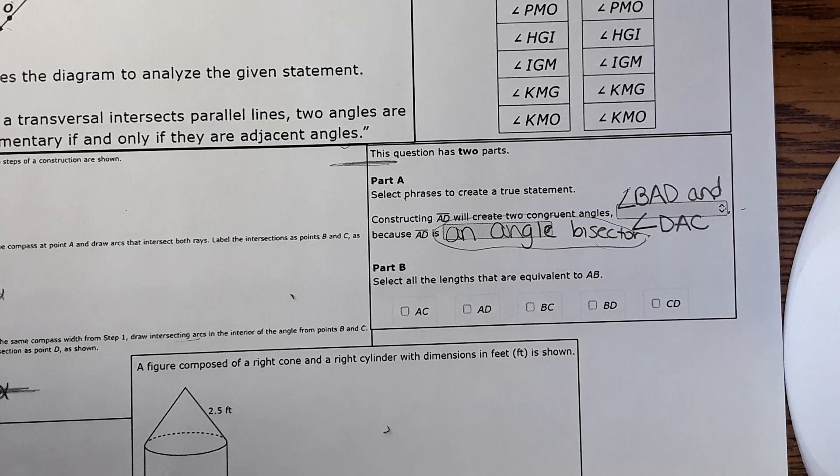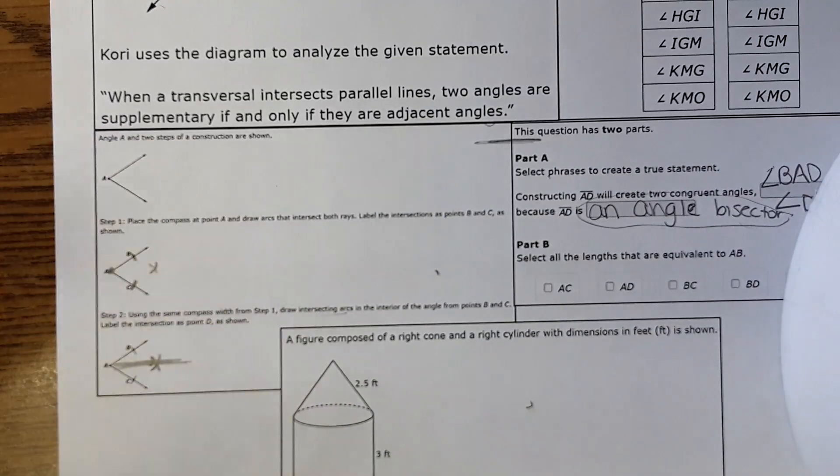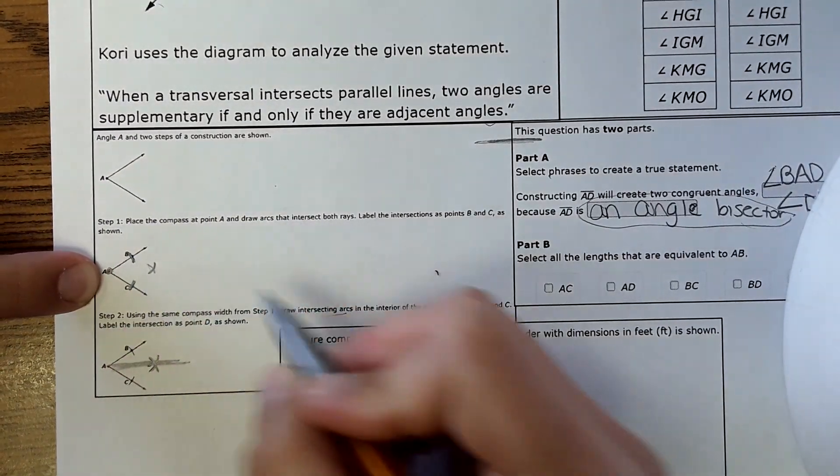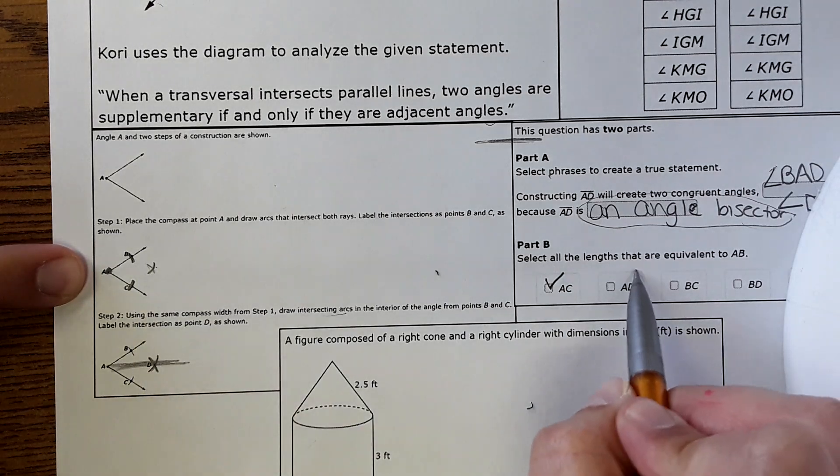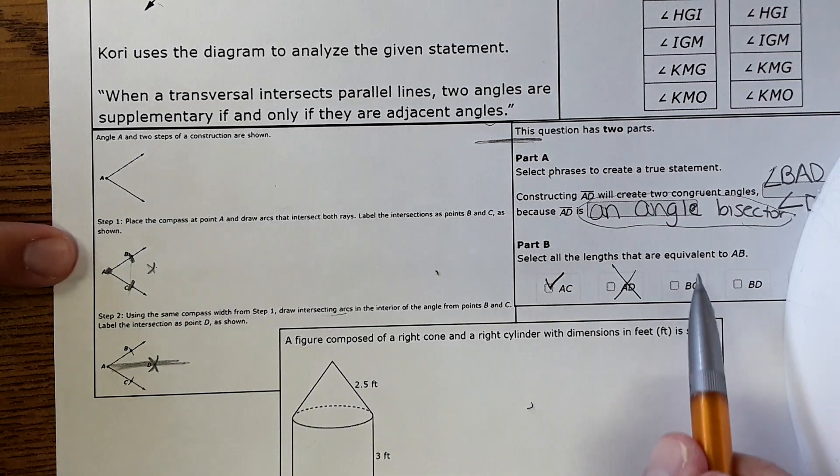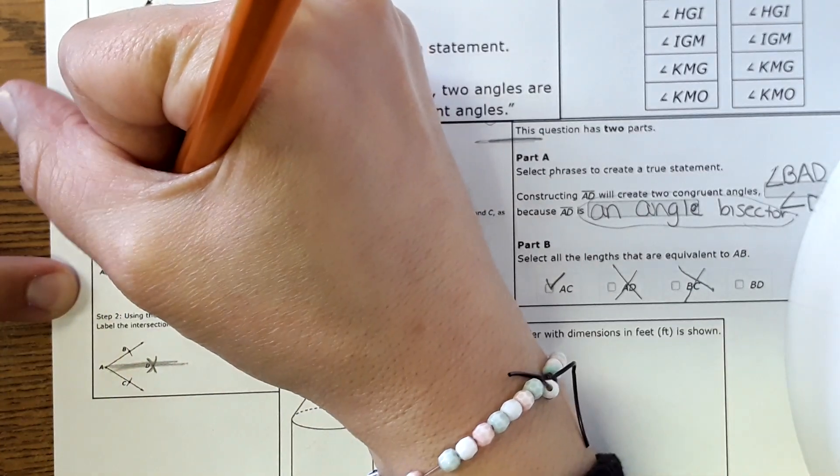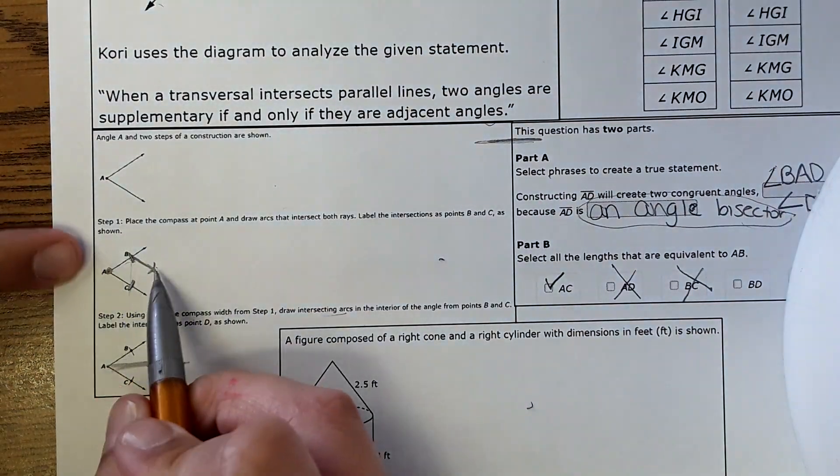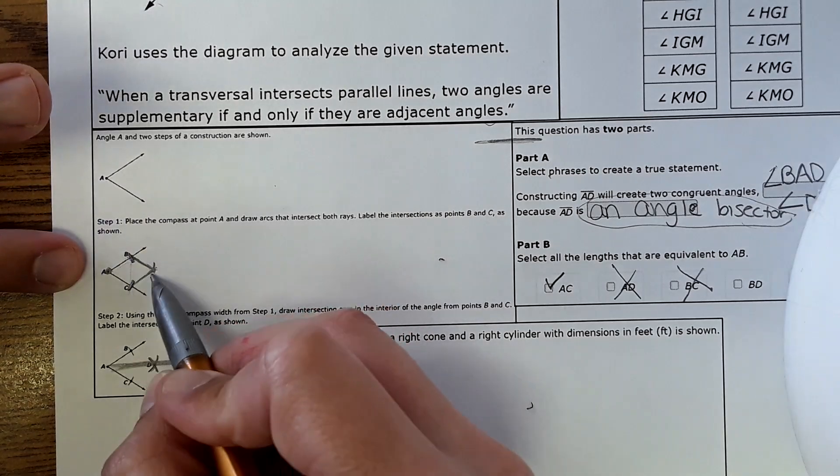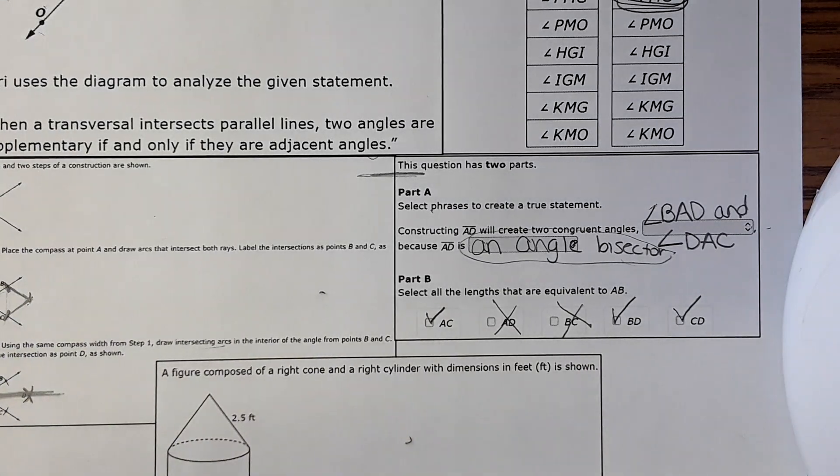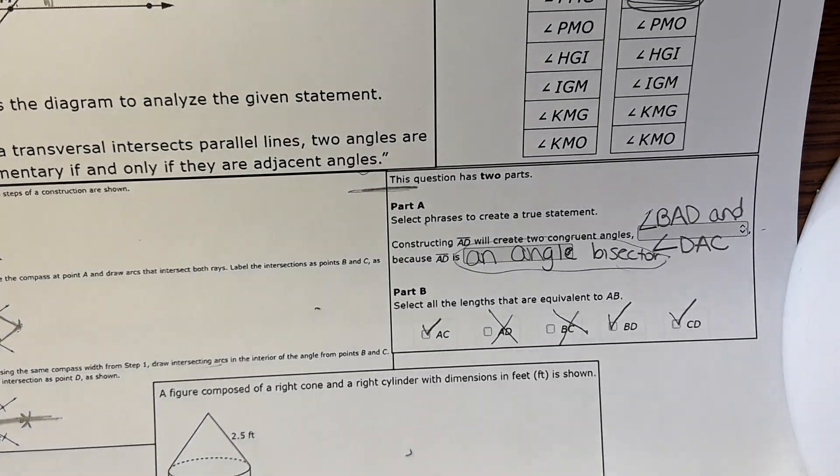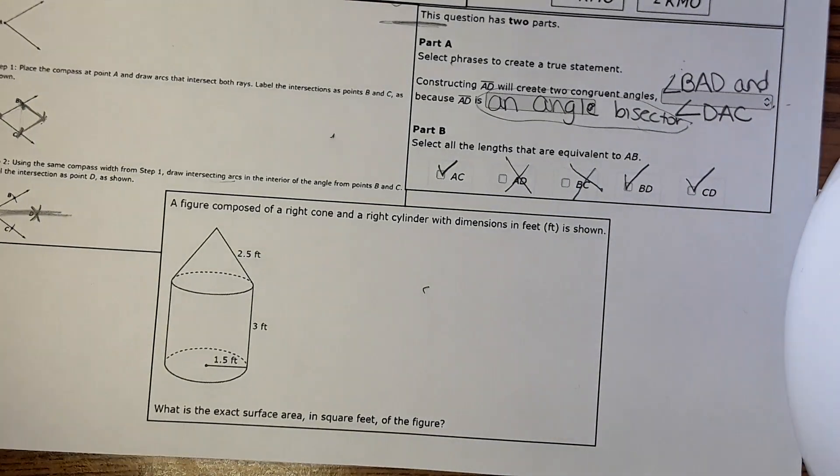Part B: select all the lengths that are equivalent to segment AB. Over here you would set the compass length to AB and it wants to know what segments are equal. AC would definitely be the same length. Would AD be the same length? No, you can even see visually that wouldn't be the same length. BC? No that doesn't really make sense. BD - this is D right here, would this length be the same as this? Yes, because you're using the same compass measurement to make that mark. So BD would be the same length and so is CD.